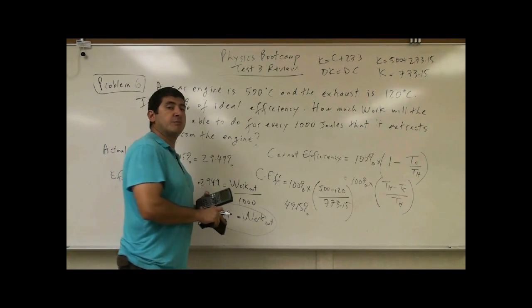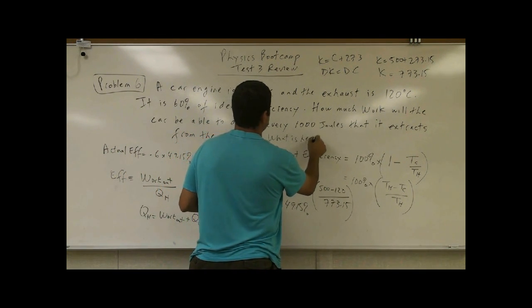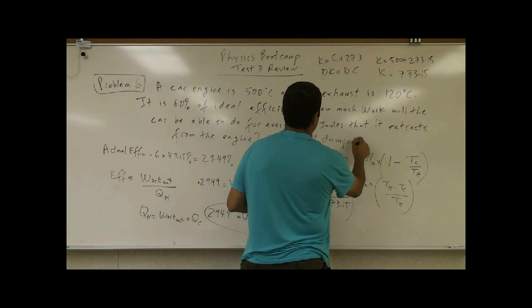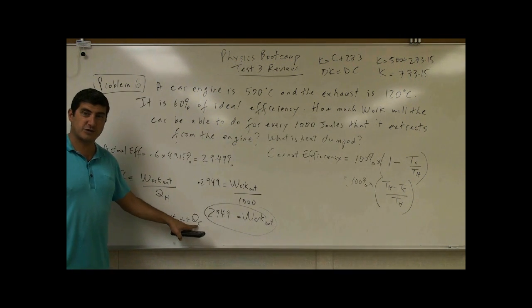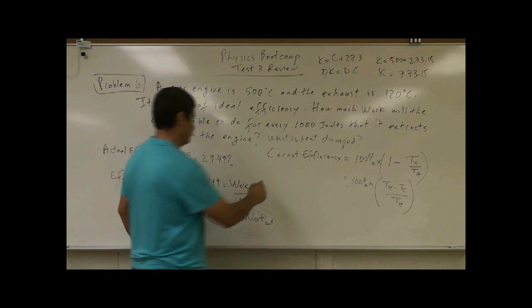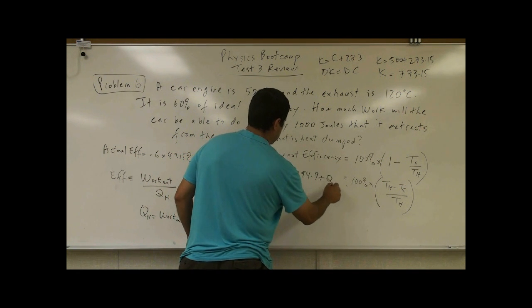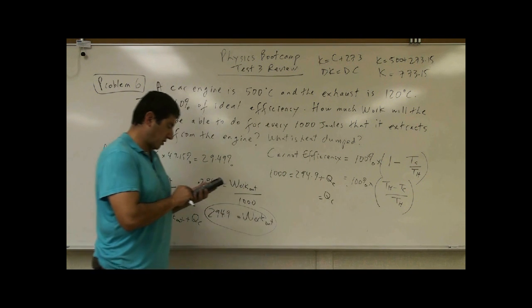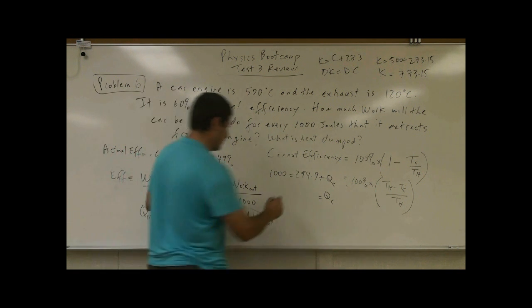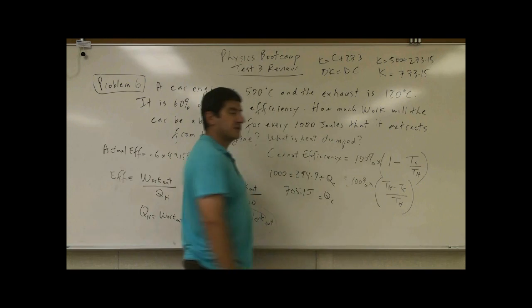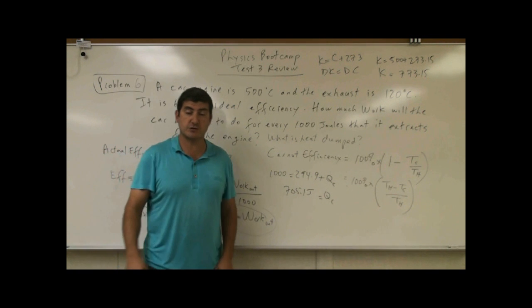If the problem asks you how much heat is being dumped to the atmosphere, what is heat dumped? Well, that would be the Q cold. So since you know this is a thousand, since you know work out is 294.9, what's Q cold? So thousand minus 294.9, 705.1 joules of energy is being dumped or wasted to the atmosphere, to the surroundings.